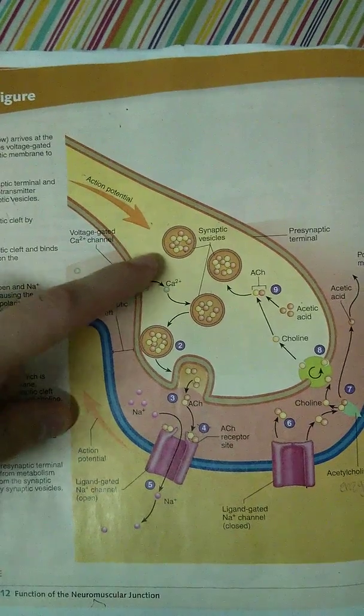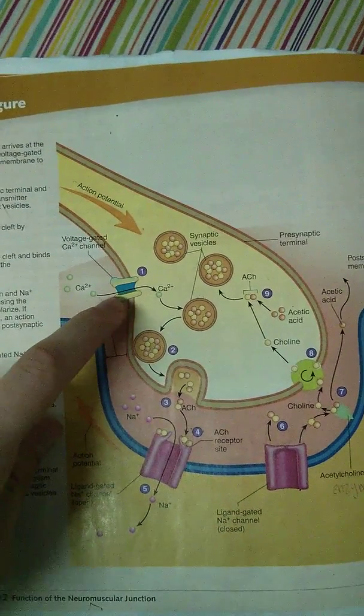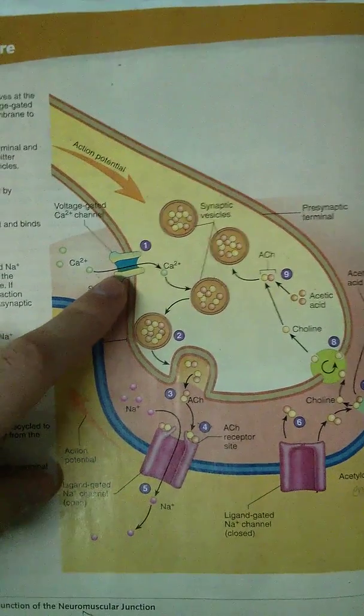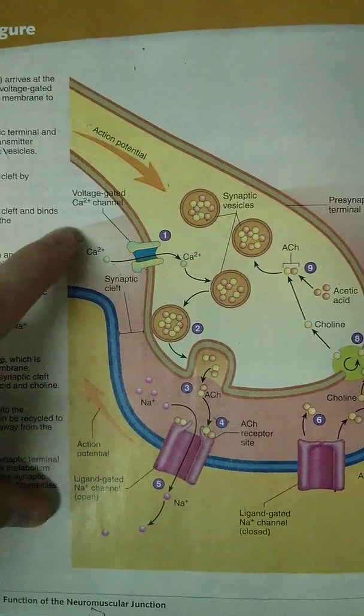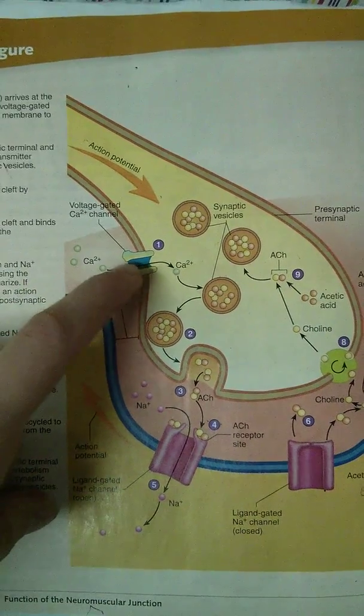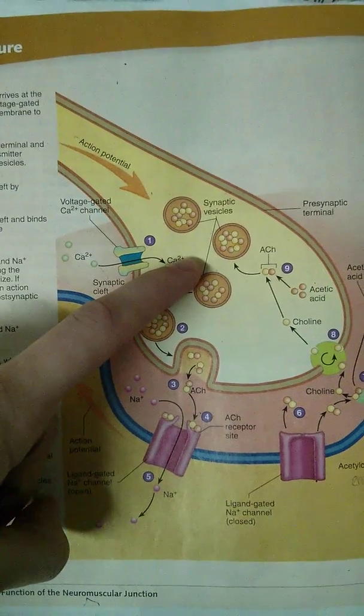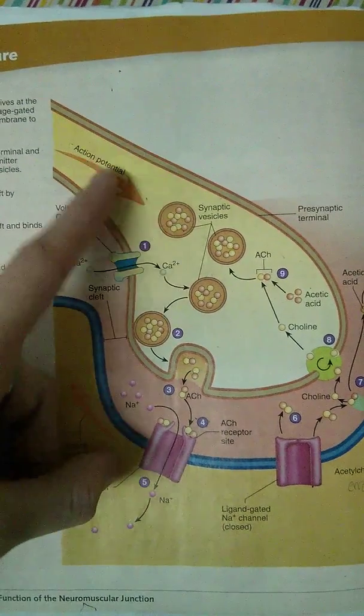So as the action potential is coming down, it's going to stimulate this channel to open, and it is a calcium channel. So all the calcium that is outside is going to now rush inside the presynaptic terminal, because it was opened by the action potential.